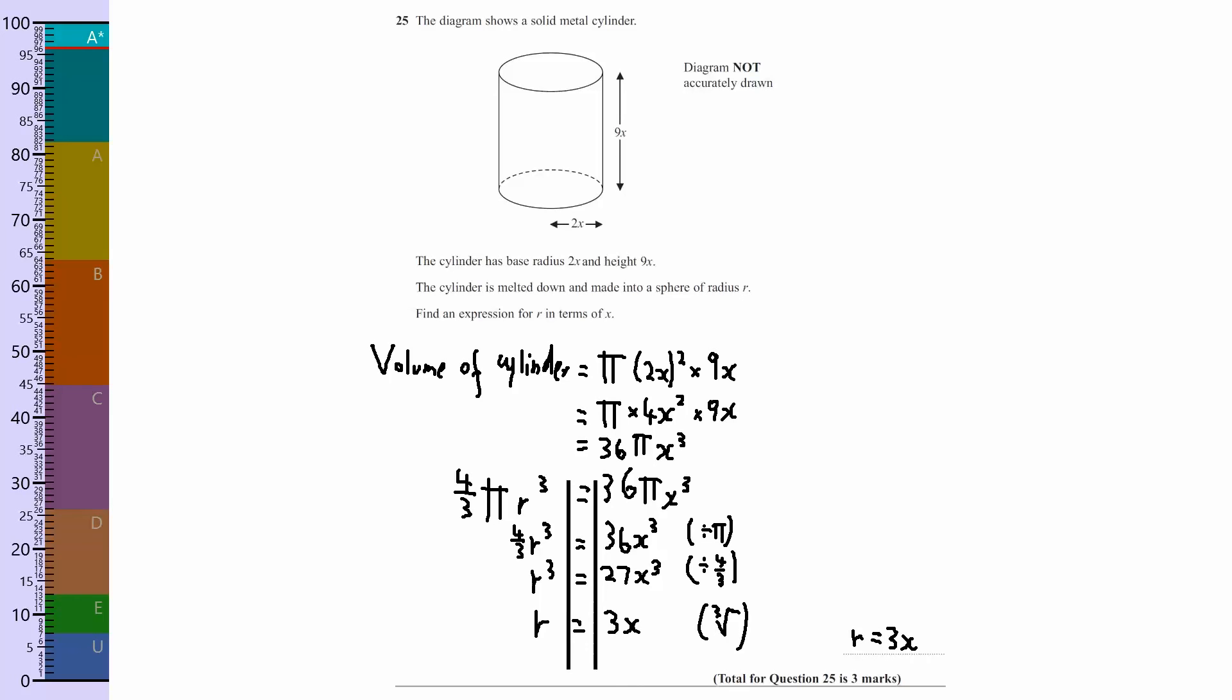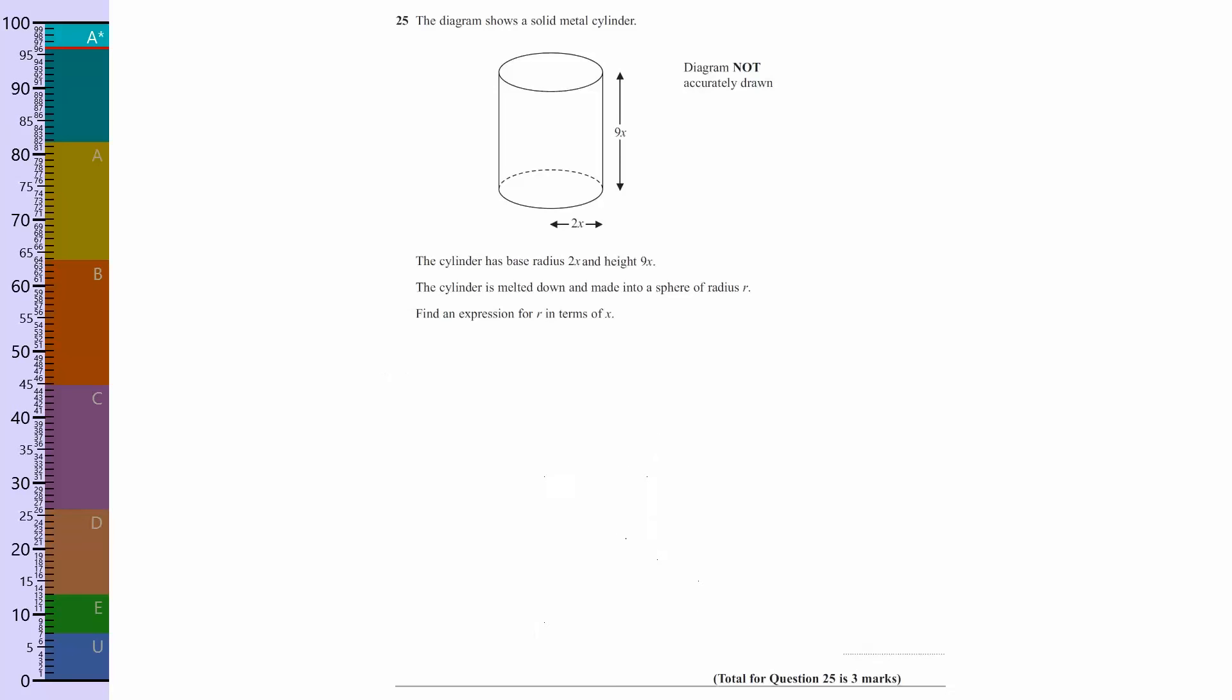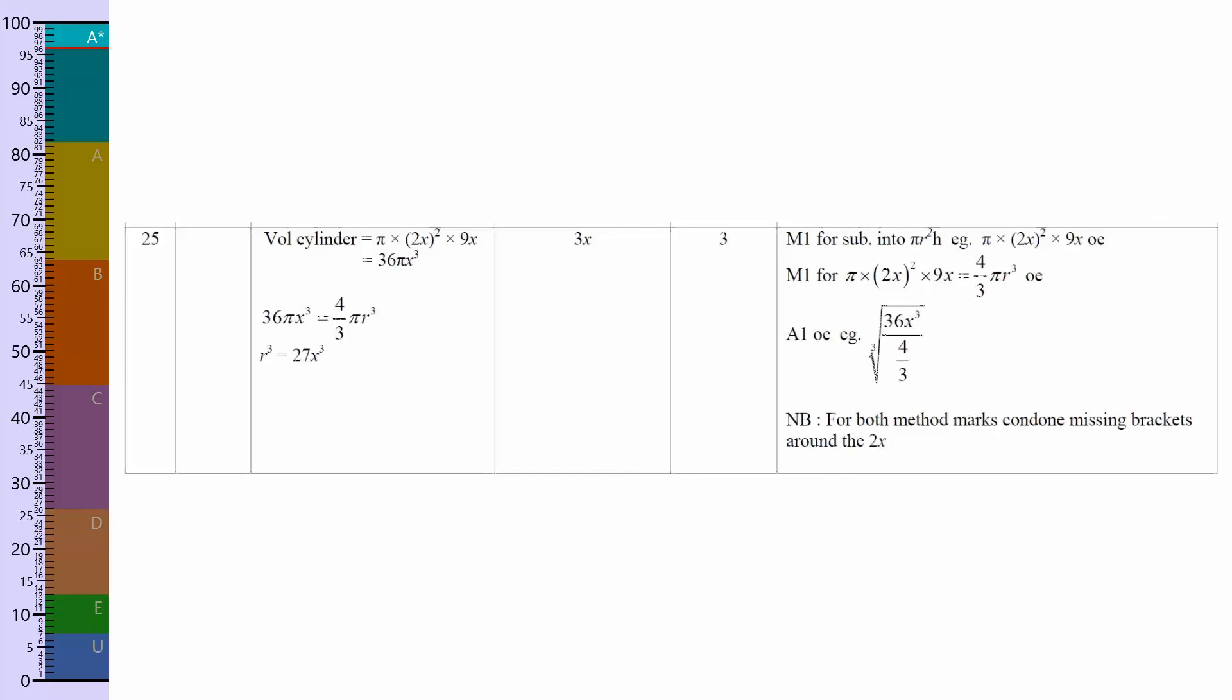Perfect. Okay, let's have a look at the mark scheme, see how well we did. So, we worked out the volume of the cylinder first, got it equal to the volume of the sphere, and then made r the subject.